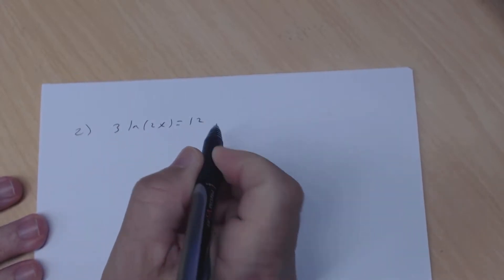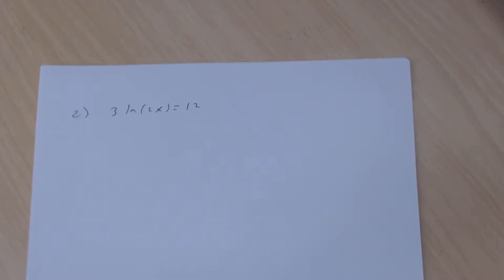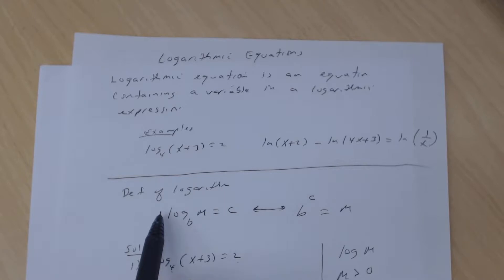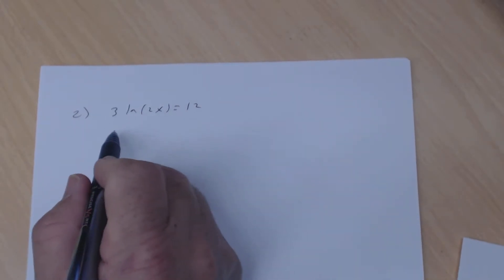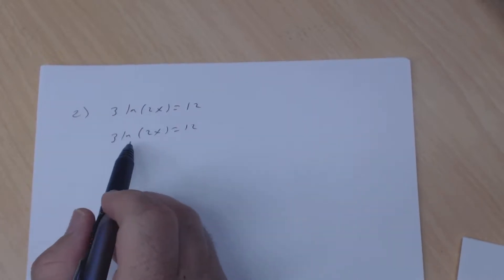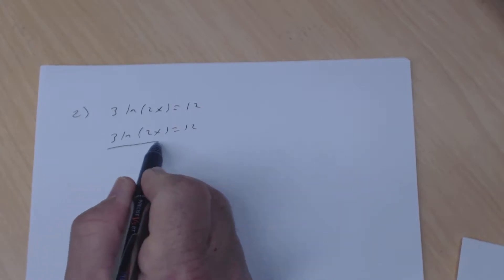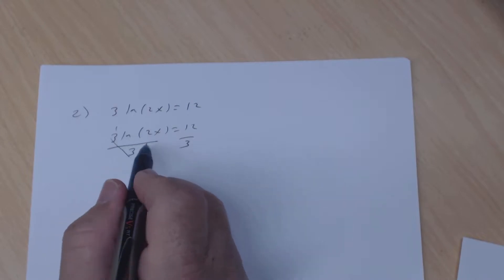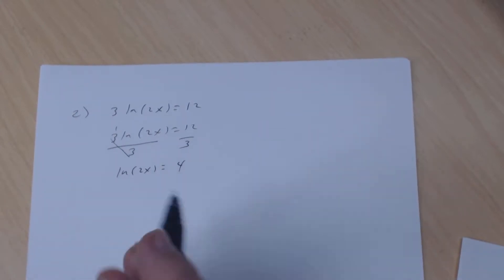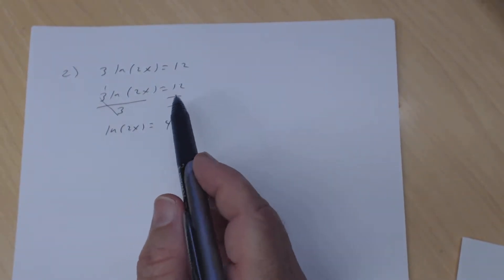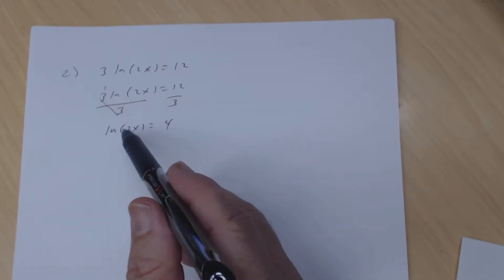Number 2: 3 times the natural log of 2x equals 12. The coefficient here is 3, not 1, so I need to divide both sides by 3. 3 divided by 3 is 1, and 12 divided by 3 is 4. So I'm left with the natural log of 2x equals 4. Always simplify — don't leave it as 12 thirds, write it as 4.